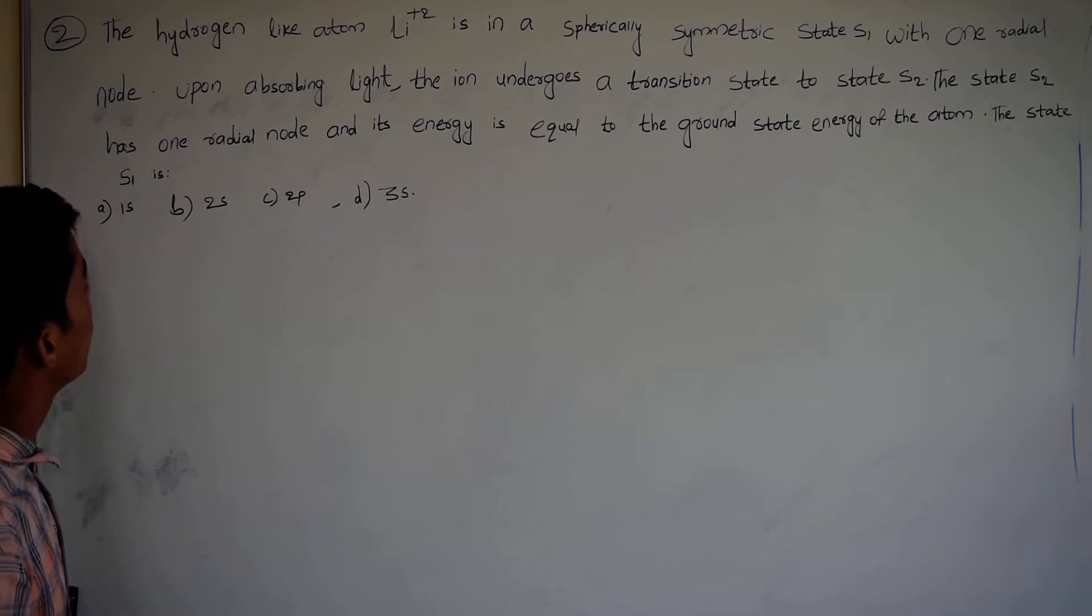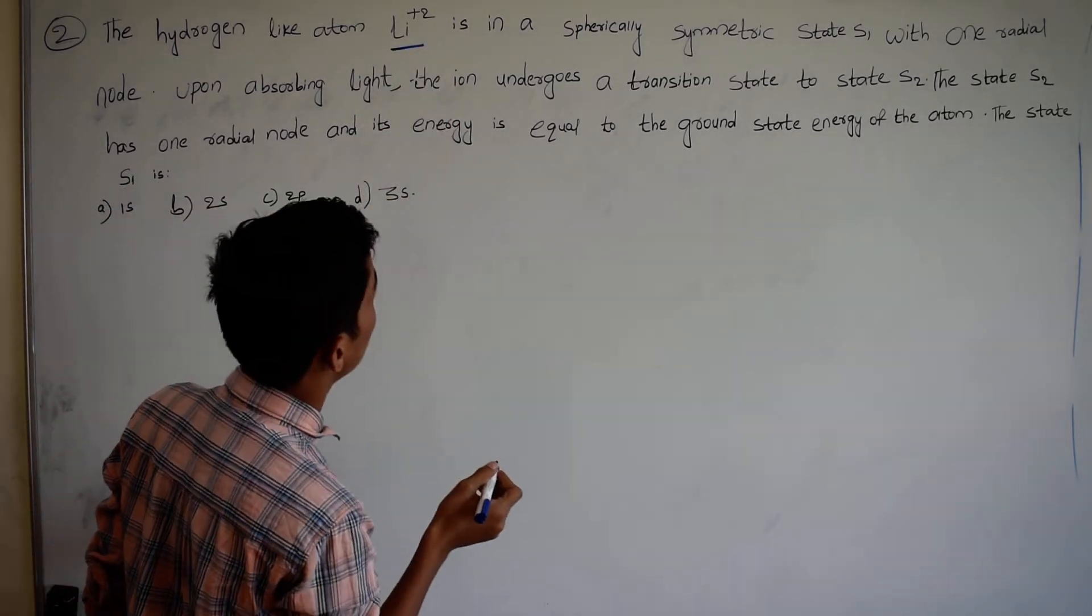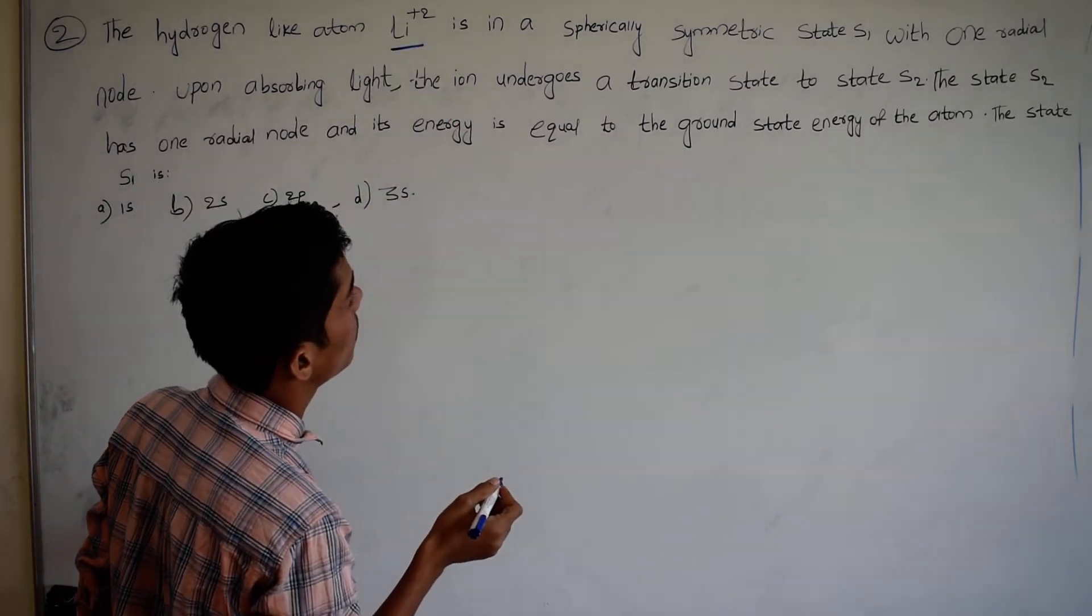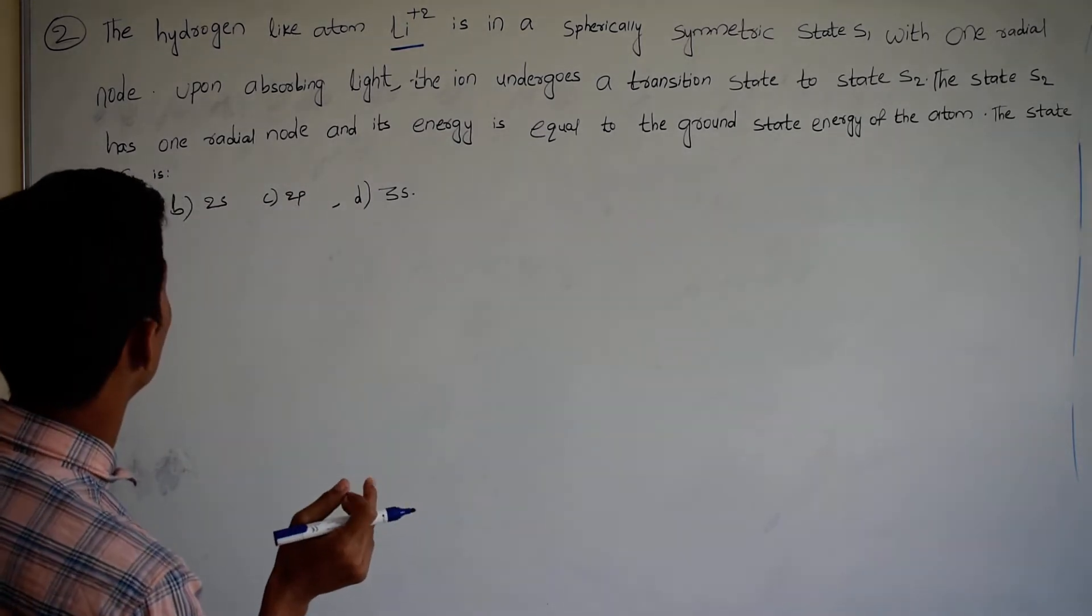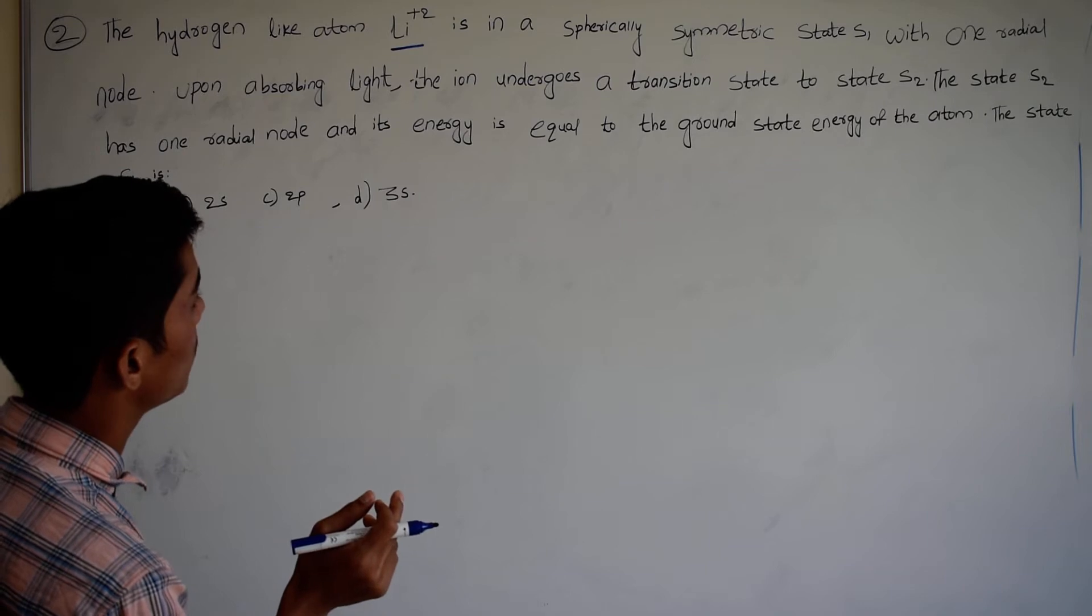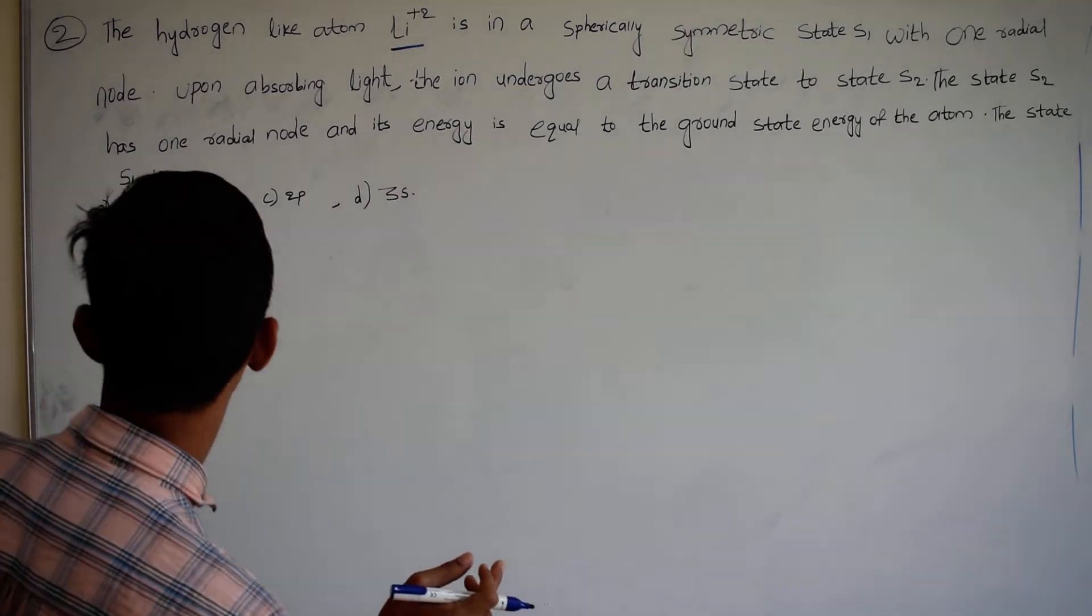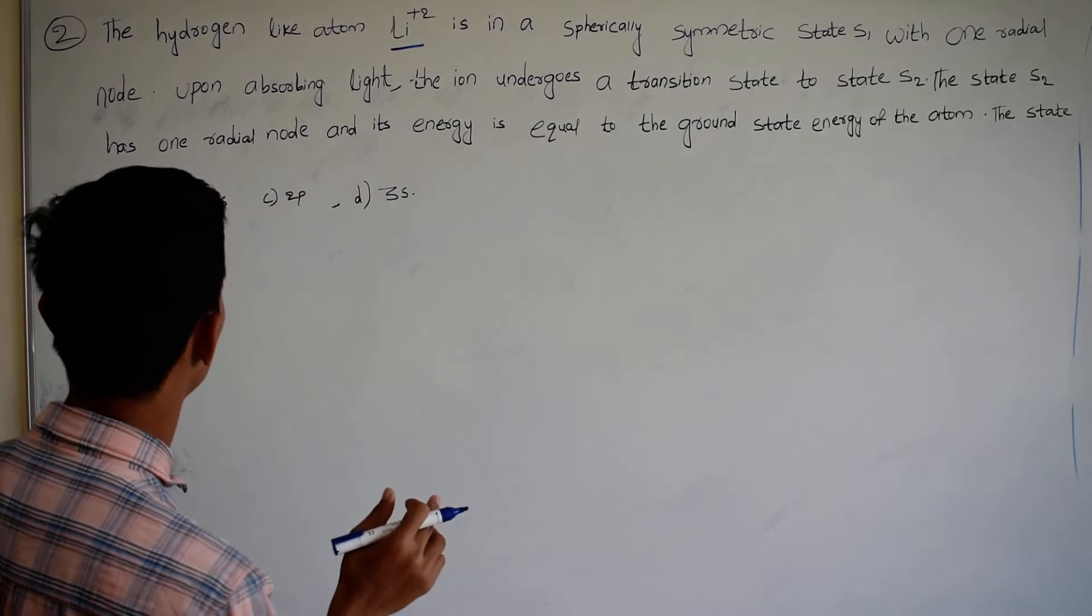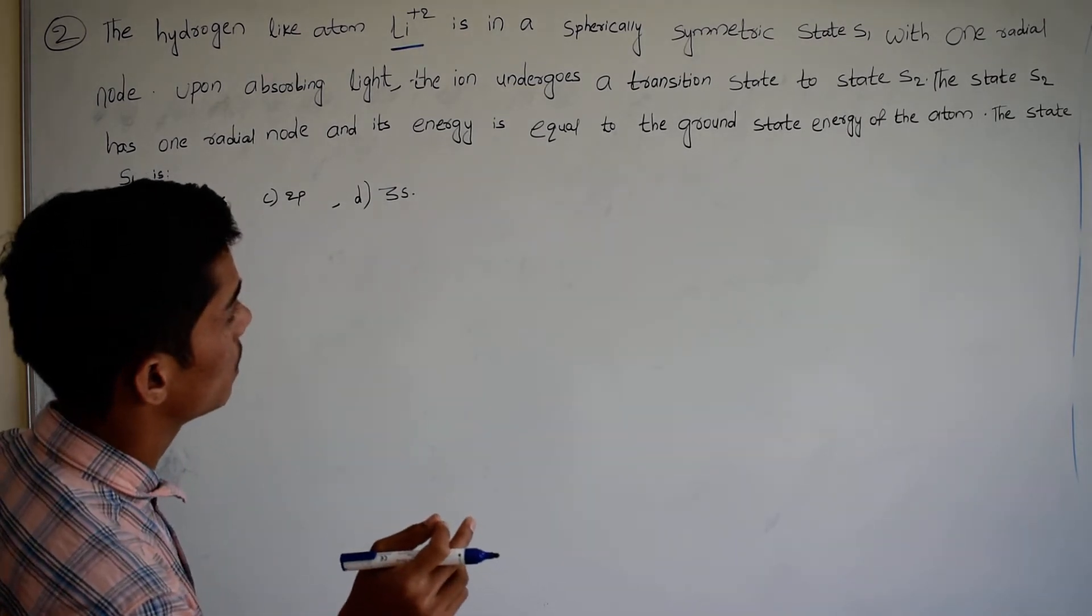The hydrogen light atom is in a spherically symmetric state S1 with one radial node. Upon observing light, the ion undergoes a transition state to S2. The state S2 has one radial node and its energy is equal to ground state energy of the atom. The state S1 is...